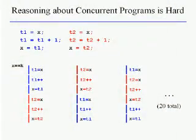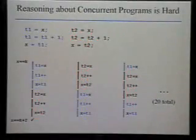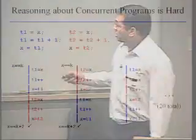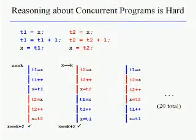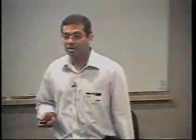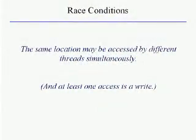Suppose X begins with value K. The first execution gives the correct value K+2. Likewise for the second. But in another execution, following the trace shows X actually gets K+1 at the end, which is wrong. This problem is well known as the lost update problem in concurrency. These and similar problems are so fundamental they have their own name: race conditions.